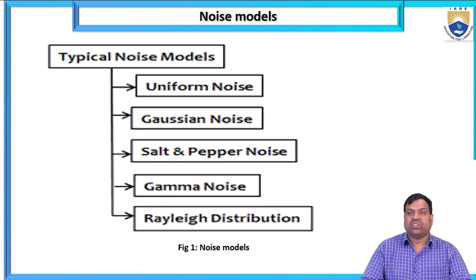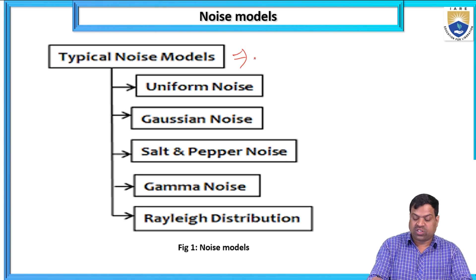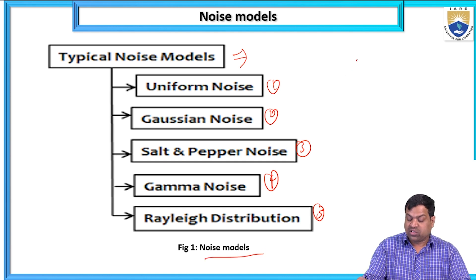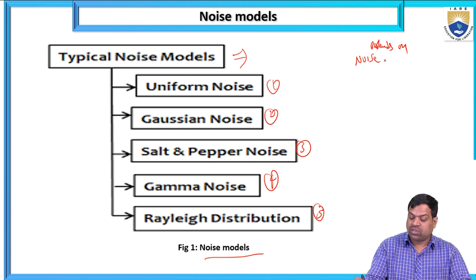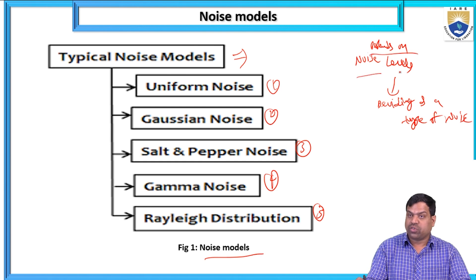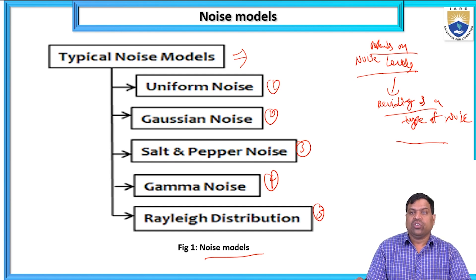What are the typical noise models? There are several types: uniform noise, Gaussian noise, salt and pepper noise, gamma noise, and Rayleigh distribution noise. Depending on the noise level, we identify the type of noise and select the appropriate filter.